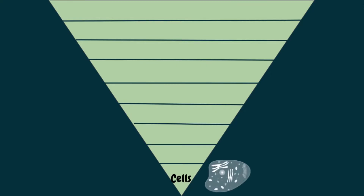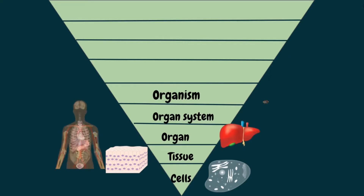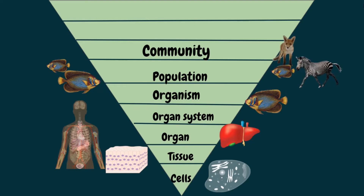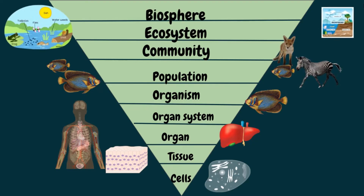All living things exhibit complex hierarchy organization. This is arranged in descending order from the lowest to the highest level of biological organization, that includes cells, tissue, organ, organ system, organism, population, community, ecosystem, and biosphere.